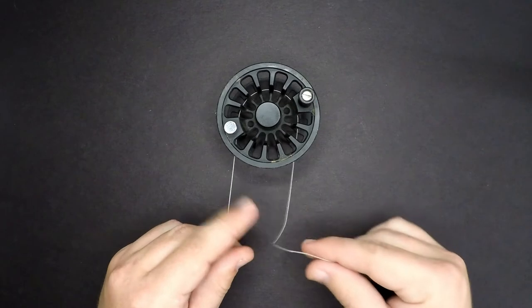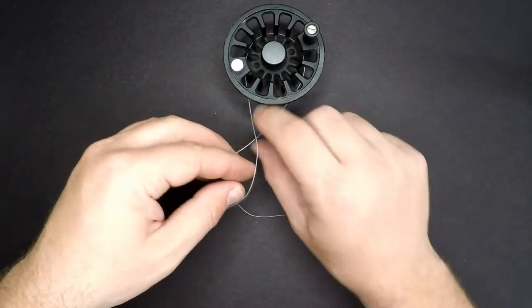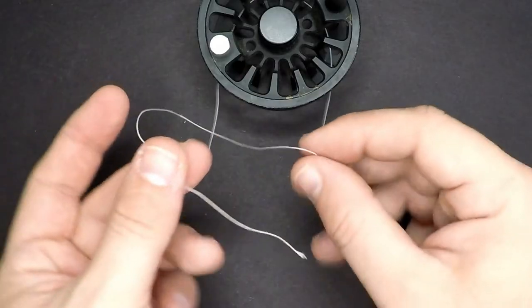And now what I'm going to do, I'm going to take the tag end of this. I'm going to slide it up underneath the main line of my fly line backing. I'm going to create a basic overhand knot.